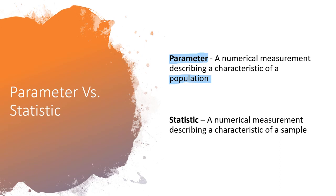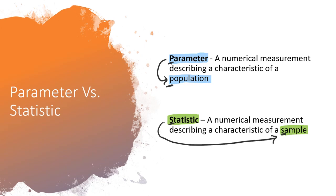A statistic is a numerical measurement describing a characteristic of a sample. The keyword here is sample, so a statistic is a number representing a sample. It's convenient that they used the same first letter: parameter describes a population — P and P — and a statistic describes a sample — S and S. That's just a way to help you remember which is which.